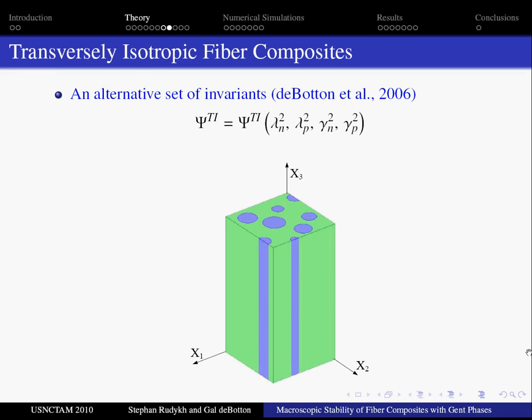We examine transversely isotropic composites with random microstructure and with fibers aligned along a direction. Here we use an alternative set of invariants introduced by de Botton and others in 2006. The motivation for use of this set of invariants has its origin in the fact that the following physical meaning can be given to them in a specific coordinate system. Lambda n is a stretch measure in the direction of fiber alignment. Lambda p is a stretch measure of the in-plane transverse dilatation. Gamma p is an amount of shear in the transverse plane. Gamma n is a measure of out-of-plane shear. The fifth invariant, gamma, describing the coupling between gamma n and gamma p is omitted.